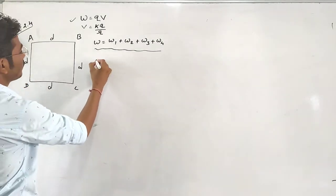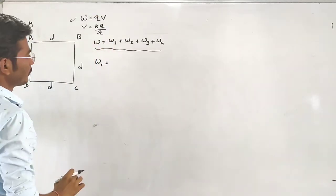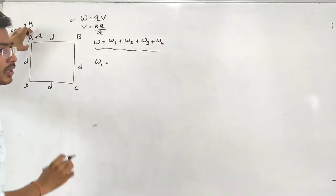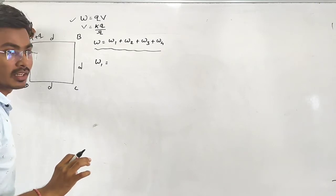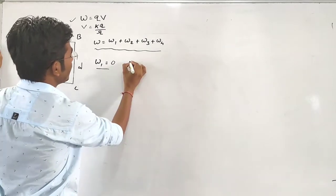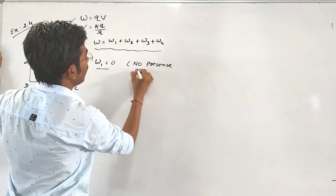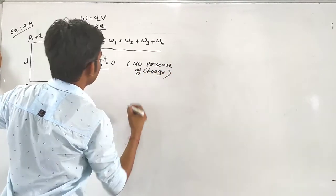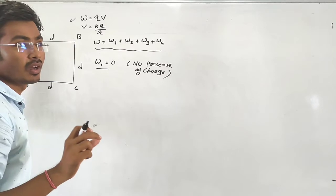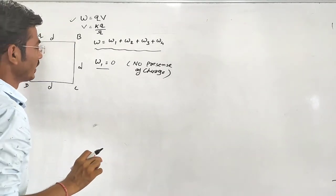For W1, we use the general equation Q into V. But for the first charge placed at point A, there is no other charge present in the region. So W1 is equal to zero.